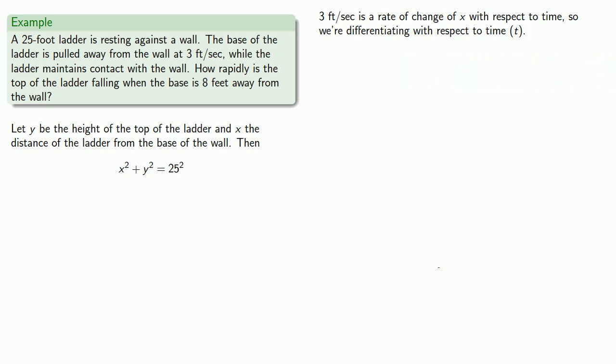We want to know how rapidly the top of the ladder is falling when the base is eight feet away from the wall and so that means we want to find dy/dt when x is equal to eight.